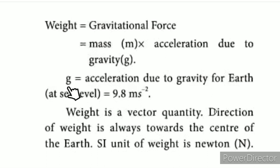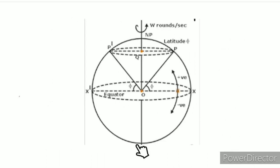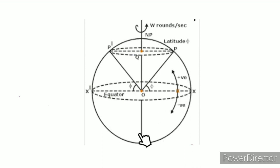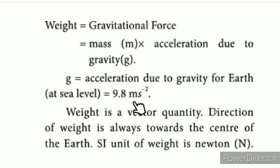The acceleration due to gravity on Earth is 9.8 m/s². Weight is a vector quantity, and the direction of weight is always towards the center of the Earth.